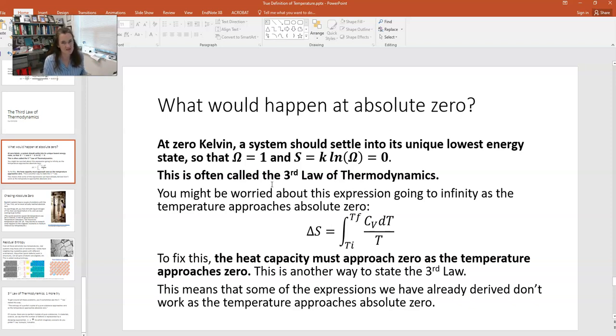But honestly, that's kind of fine because a lot of things change in physics as you approach absolute zero. And physics gets pretty weird at those very low temperatures. So I think it's okay that we would have to adjust our heat capacities and some of the other expressions, which were developed really to deal with more normal temperatures for our everyday experience.